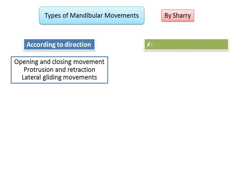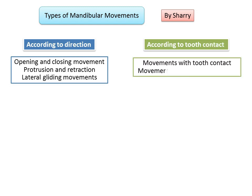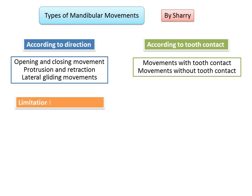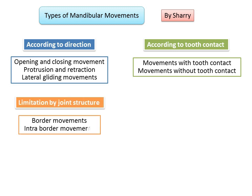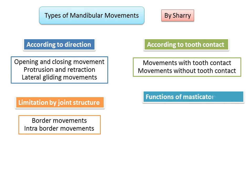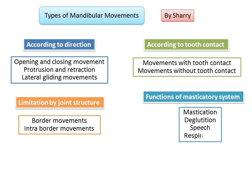According to tooth contact, mandibular movements could be movements with tooth contact or without tooth contact. The limitation of the TMJ structure can lead to border movements and intra-border movements. Based on functions of the masticatory system, the mandibular movements can be those made during mastication, deglutition, speech, and respiration.